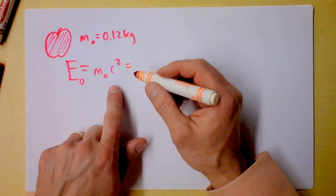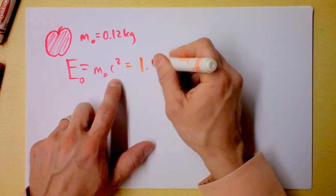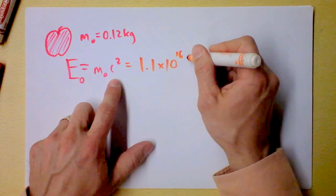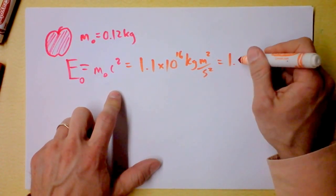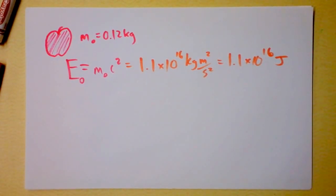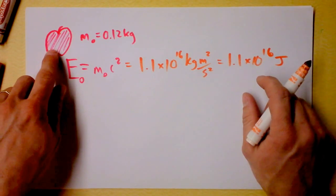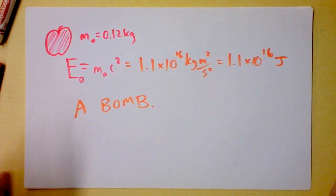I'm going to use kilograms and meters per second squared. The energy is 1.1×10¹⁶ joules. That's enough energy to power all of the United States energy needs for half an hour. Holy cow, all you have to do is annihilate an apple? Let's hope the US government has anti-apples to generate energy, or a bomb. That would be unpleasant.